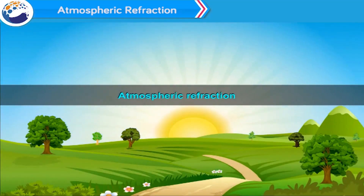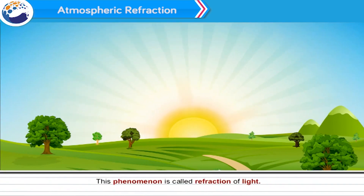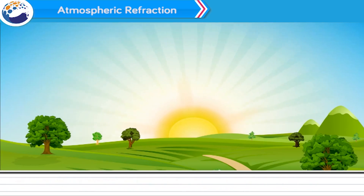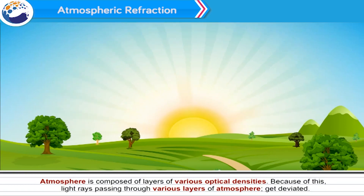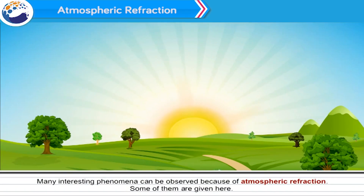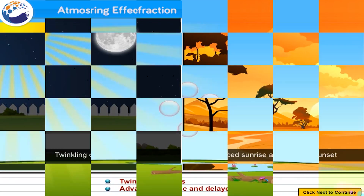Atmospheric refraction: When light enters from one medium to another, there is a deviation in its path — this phenomenon is called refraction of light. The atmosphere is composed of layers of various optical densities, and because of this, light rays passing through various layers of the atmosphere get deviated. Many interesting phenomena can be observed due to atmospheric refraction, including twinkling of stars, advanced sunrise and delayed sunset.